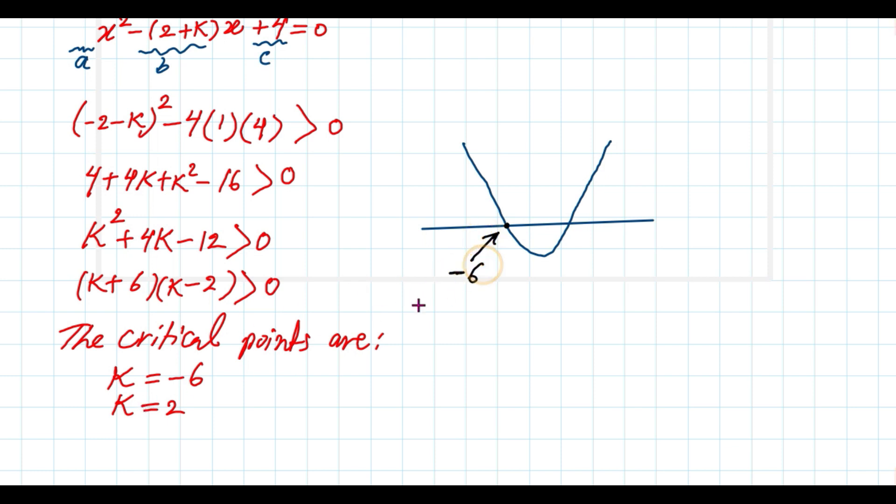The first critical point is negative 6, and the second critical point, which is the root for the curve, is 2.